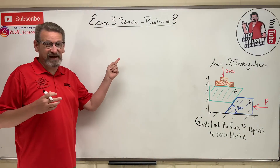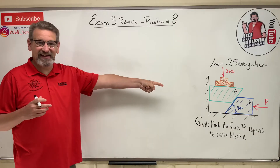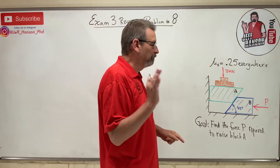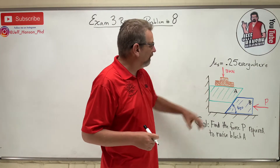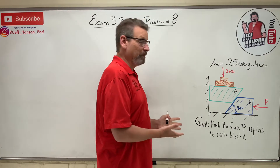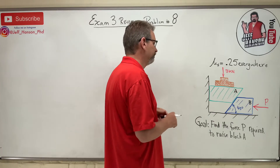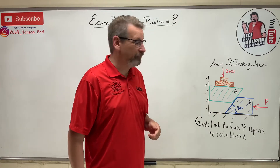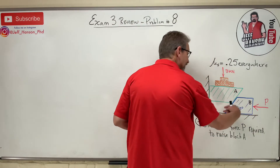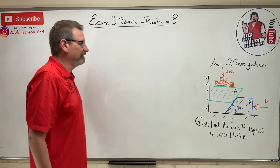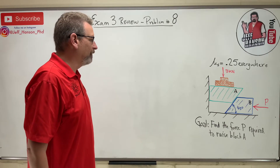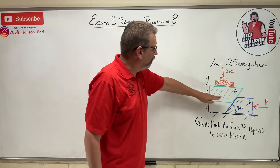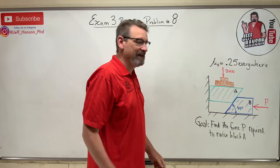Hey friends, statics exam 3 problem number 8 - it's a friction wedge problem. Find the force P required to raise block A. Block A has a weight sitting on top of it. The blocks have no weight themselves - they're magic blocks - but you need to know which way they're sliding because that determines which way friction goes. Block B slides in, which causes block A to slide up. Friction is 0.25 everywhere - mu sub s at the wall and block-to-block is 0.25.